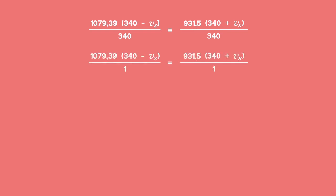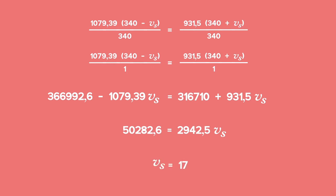Then, isolating the velocity of the source, or the car, leaves us with a car that is traveling at 17 meters per second. This looks really complex, but stay with us.